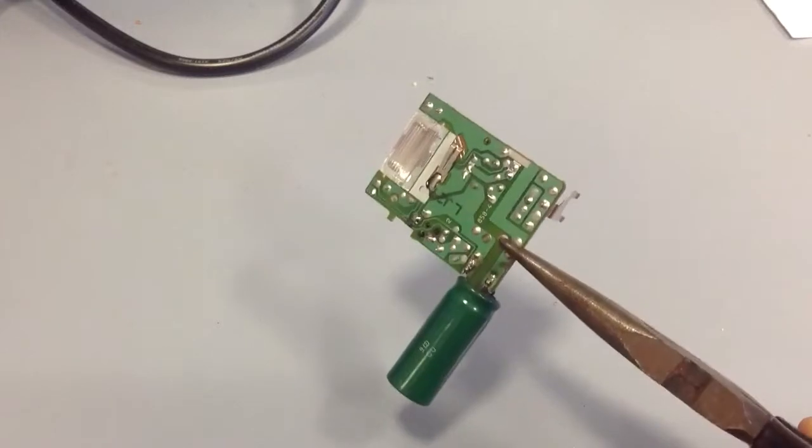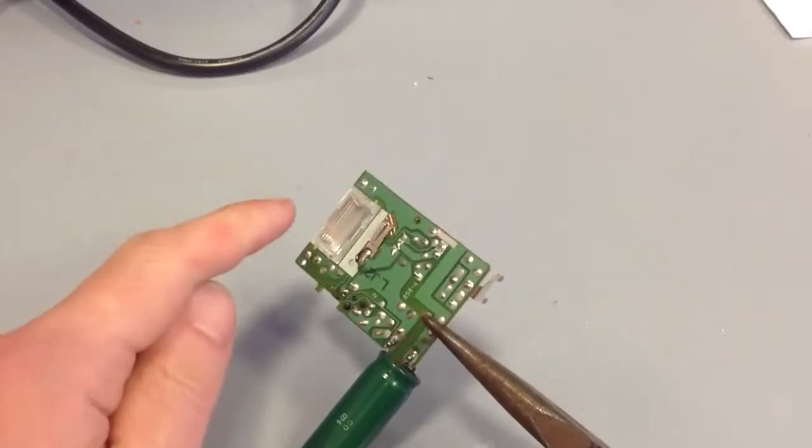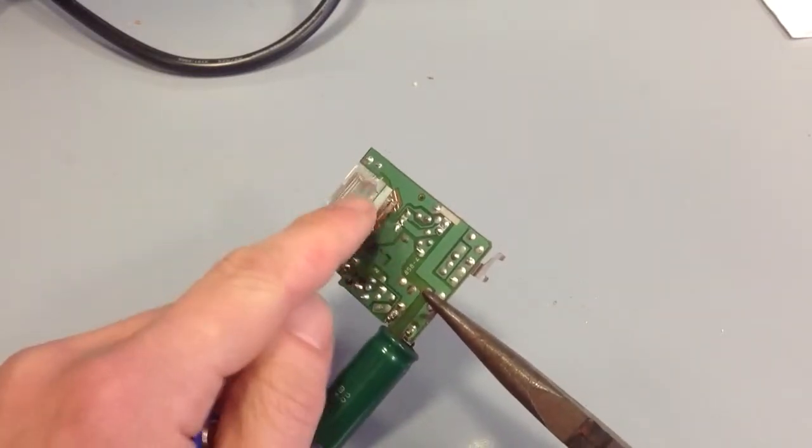So I've ripped out a section of an old digital camera. You can see it's the flash circuit here, there's the flash bulb.